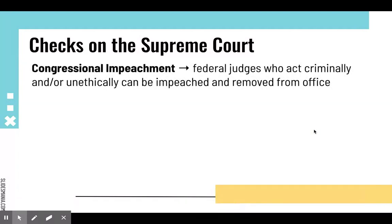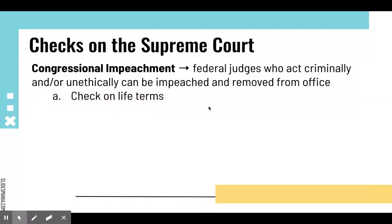Impeachment is also a check — keeping that principle of limited government and preventing abuse of power. Federal judges who act criminally and/or unethically can be impeached and removed from office. This is important because impeachment is a pretty significant check on life terms — it prevents a justice from abusing that power over a very long period of time, especially since they don't face elections like other representatives and the president do. This is a congressional check on the Supreme Court — the legislative branch checking the judicial.